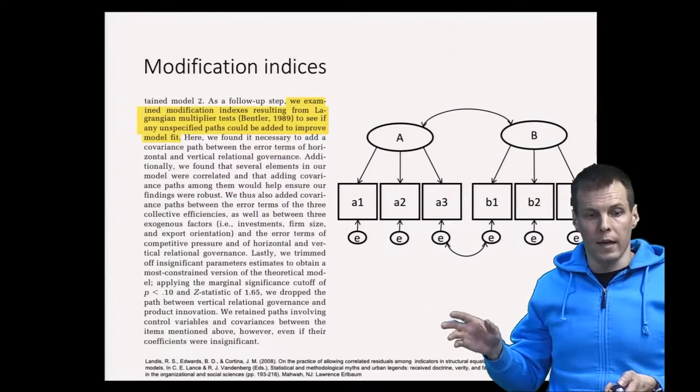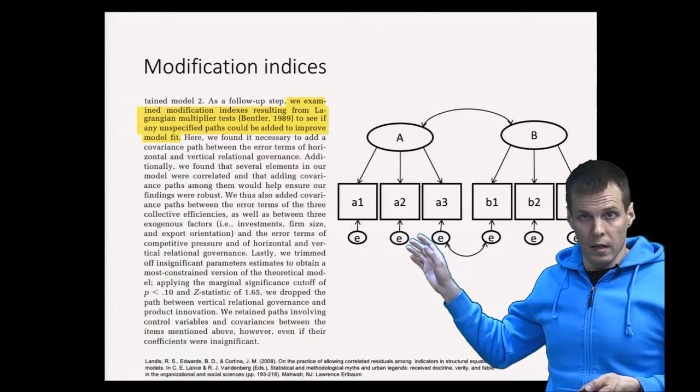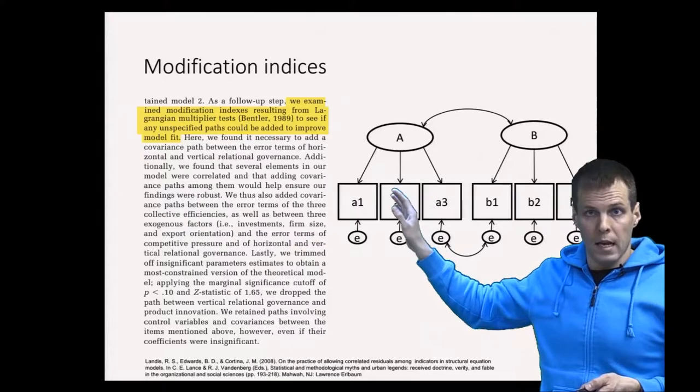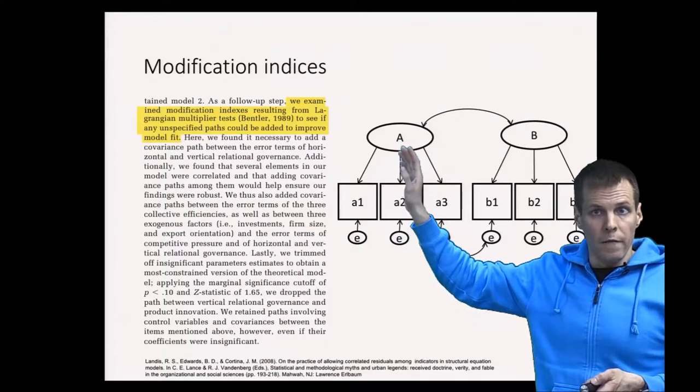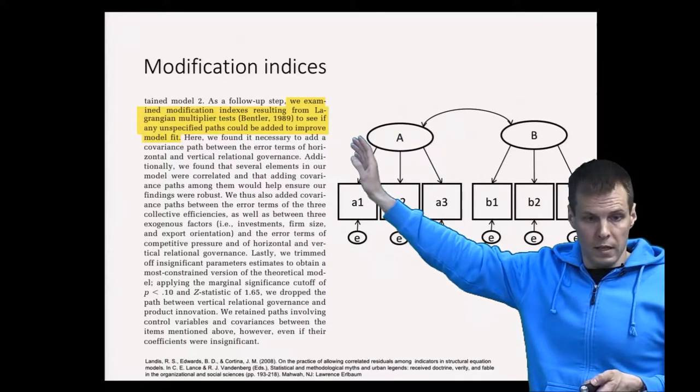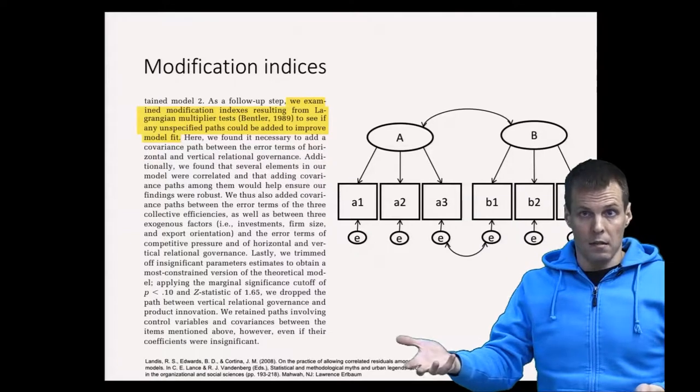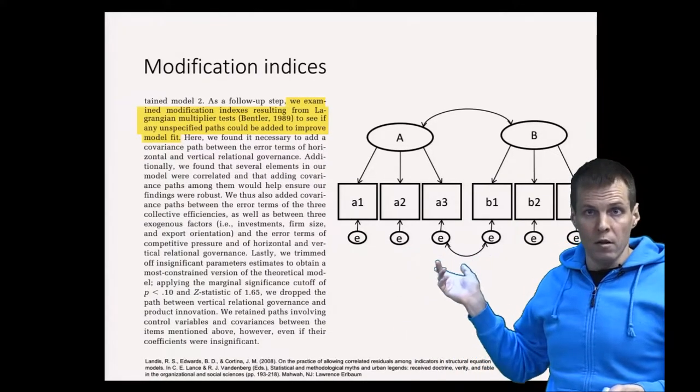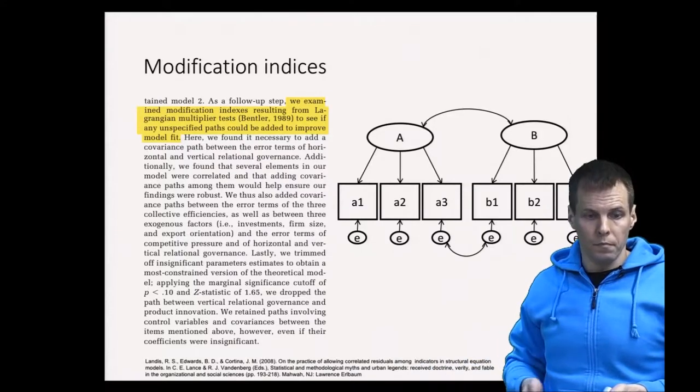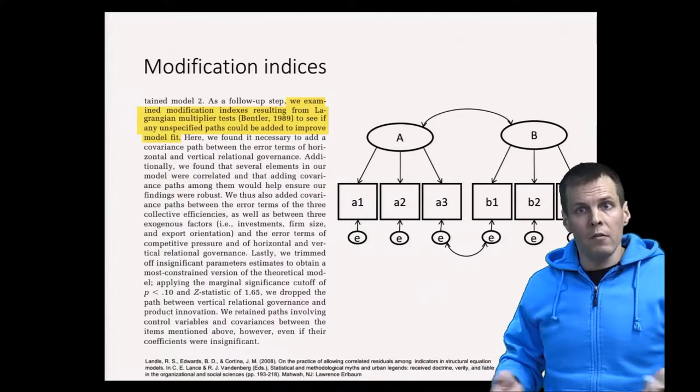That should not be done mindlessly, and Meskuit and Lanzarini give a good example of how to report these modification indices. First of all, they report what's the purpose of these indices. The purpose is that you can make the model reproduce the correlation matrix better by adding something to the model. Then you explain what you do.